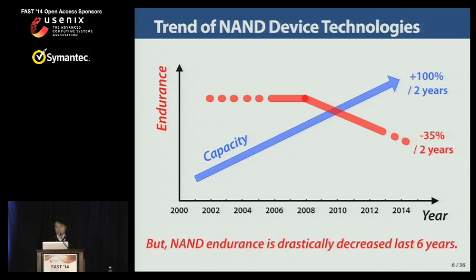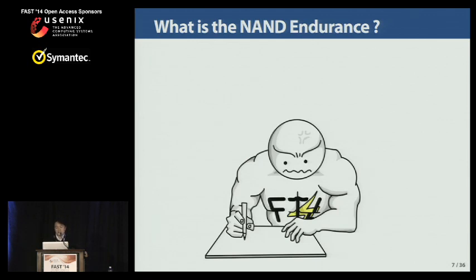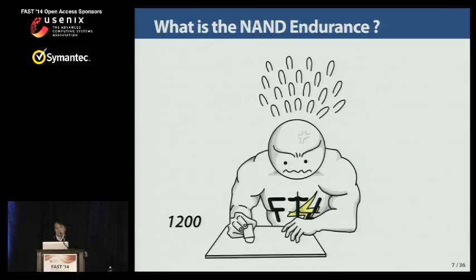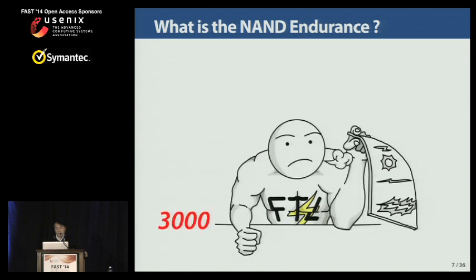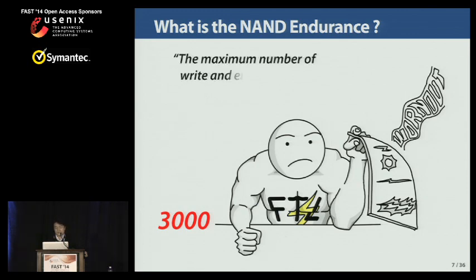However, NAND endurance has drastically decreased over the last five years as a side effect of recent advanced technologies. What is NAND endurance, and why is it decreased? Let's go back to FlashMan. He writes letters and erases paper, repeating writing and erasing very diligently. After 3,000 repetitions of writing and erasing, the paper is eventually worn out. Therefore, NAND endurance can be thought of as the maximum number of write and erase cycles until a NAND cell is worn out.